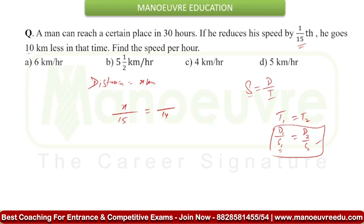And you are covering the distance 10 km less. That means the new distance will be x minus 10. You can solve this equation to get the value of x. After solving, you get: 15x minus 150 is equal to 14x, so x is equal to 150.